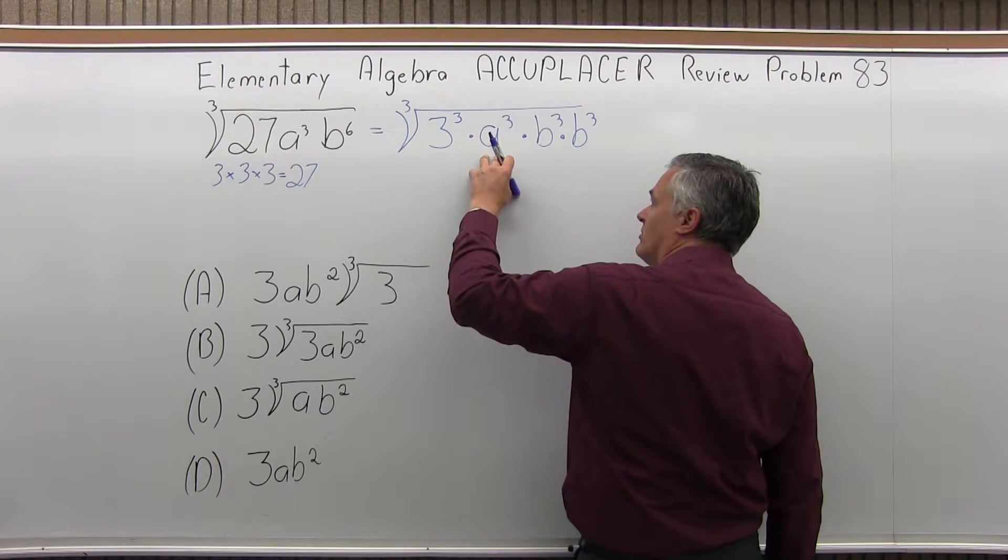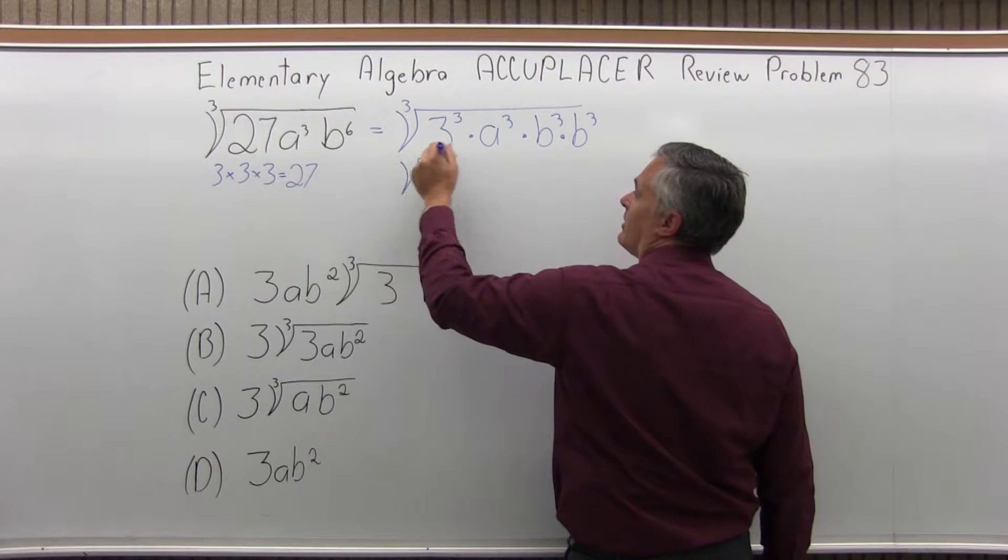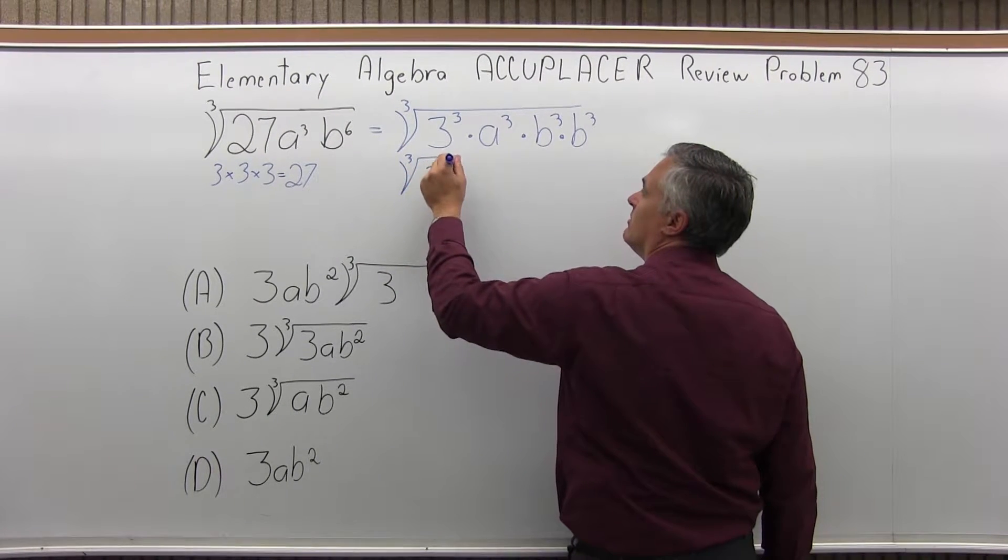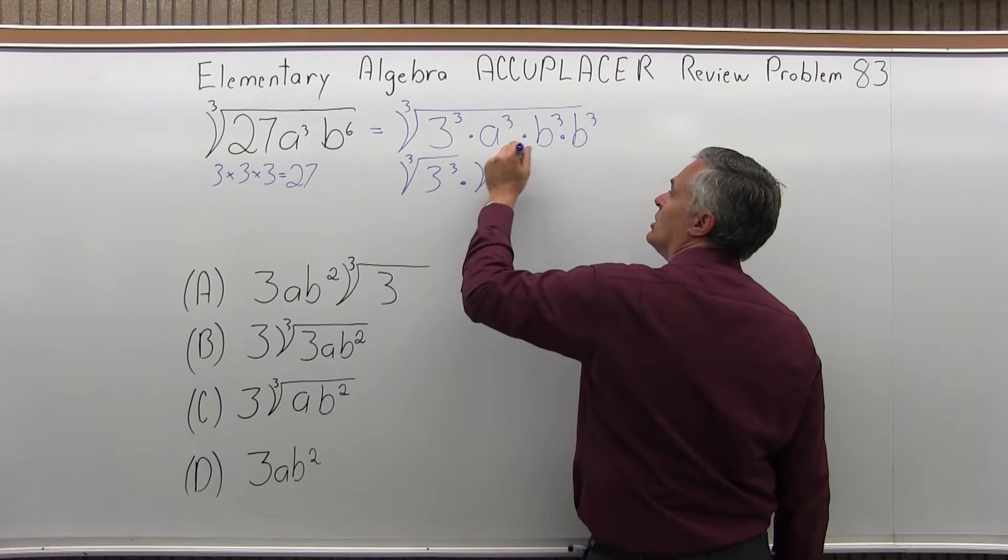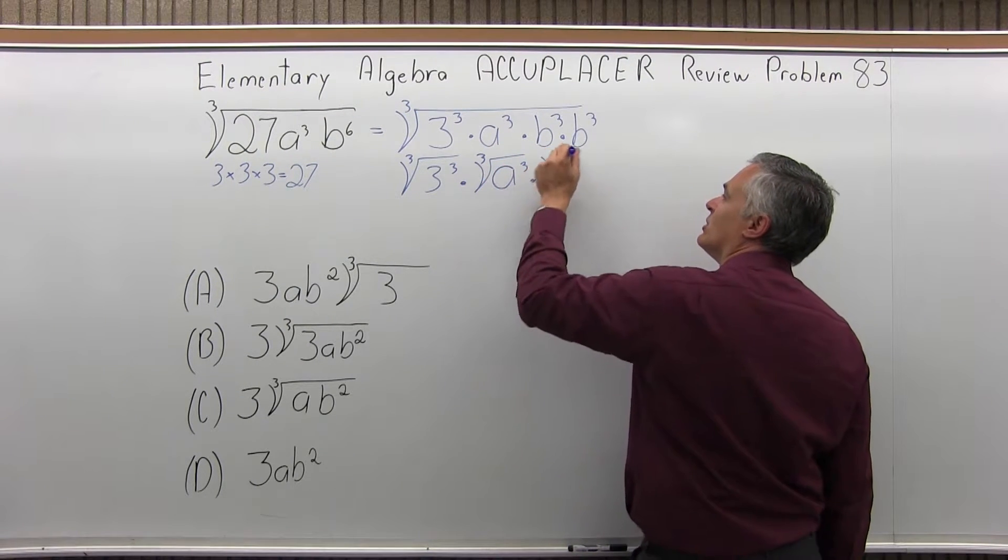Now, instead of one big cube root, let me make it into a bunch of little ones. So I will have the cube root of 3³ times the cube root of a³ times the cube root of b³ times the cube root of b³ again.